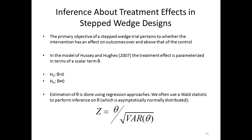When doing a stepped wedge design, the chief target of interest is whether the treatment is effective. Under the parameterization of the Hussey and Hughes model, this amounts to testing whether theta equals zero — our null hypothesis — versus theta being not equal to zero. Using a regression-based approach, we use a Wald statistic for inference, which is essentially the ratio of the treatment effect over its estimated standard error. If you have a large-ish trial, that Wald statistic is asymptotically normally distributed, making it a convenient way for inferring whether the treatment effect is zero or not.